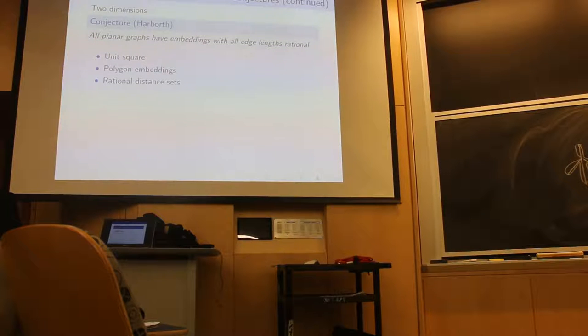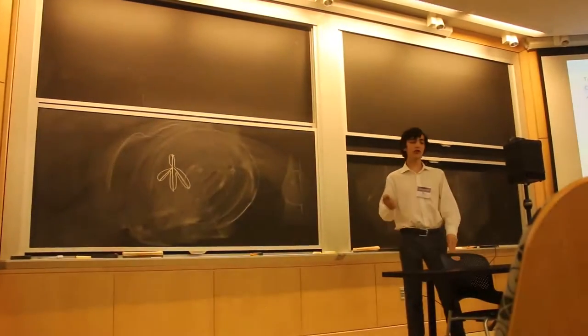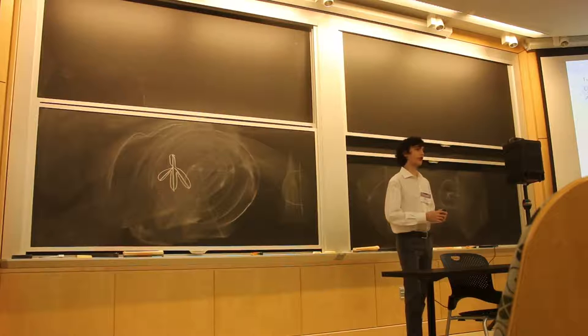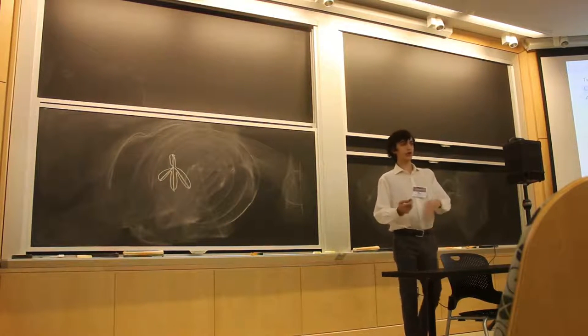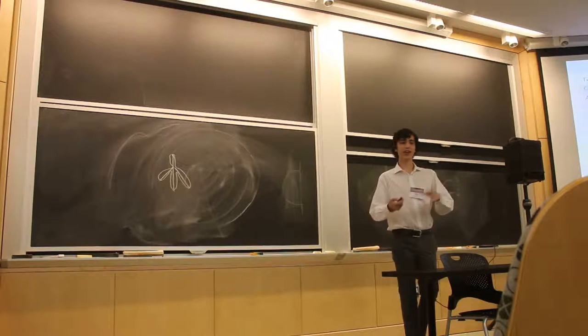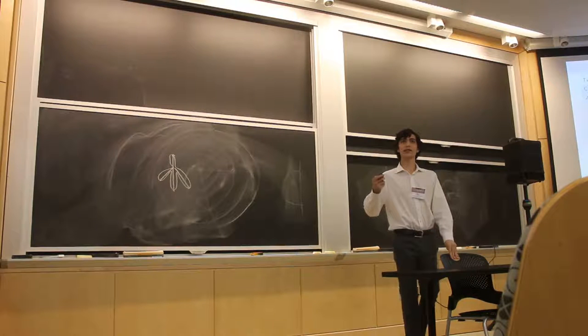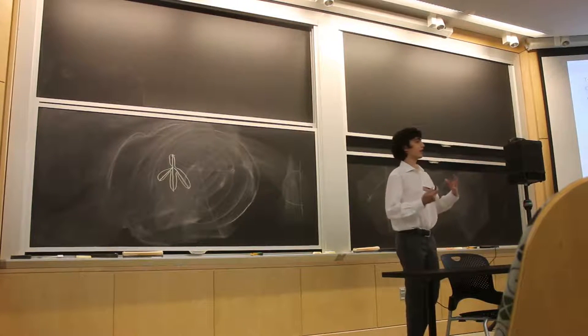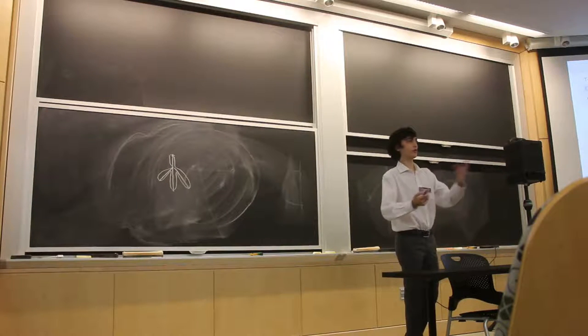It is unknown if there exists a dense rational distance set in the plane. And in fact, it is even unknown if there exists a rational distance set of eight points with no three collinear and no four on a circle. However, it is known that there exists rational distance sets of infinite size with all vertices on a circle. This can be constructed in one of a variety of ways, including a very nice trigonometric construction. And given that that is the only really nice example of rational distance sets, we hope to use that sort of technique to extend to three dimensions.